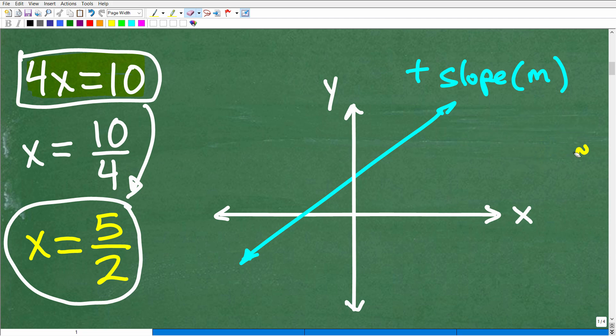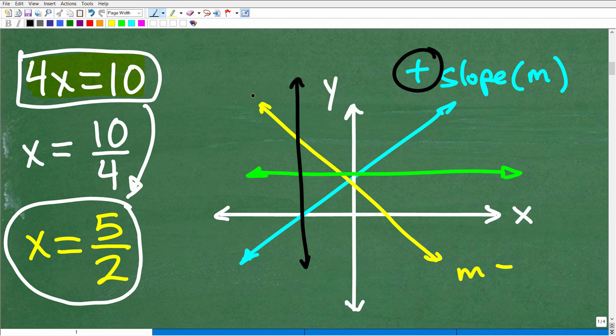Lines that run from left to right or go uphill this way have a positive value as their slope. Lines that go this way, that they fall from left to right, have a negative slope value. So let's talk about lines that are horizontal and lines that are vertical.